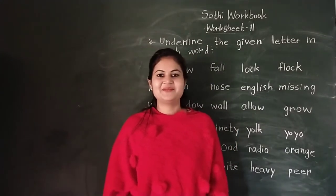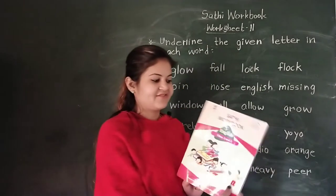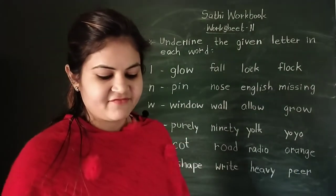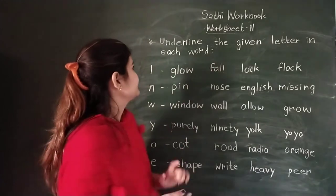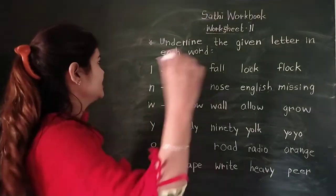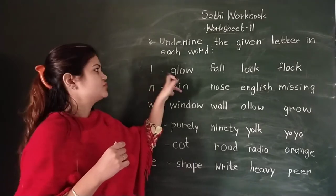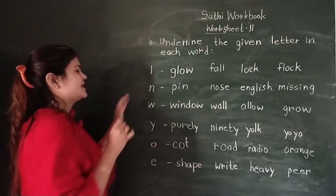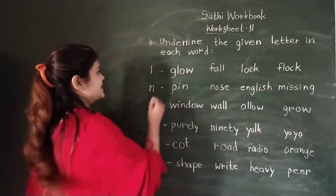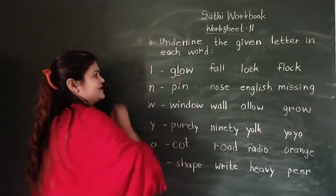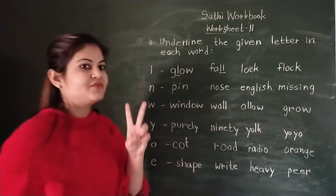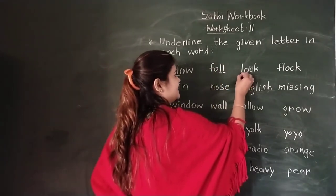Hello everyone, welcome back to my channel English Club. This is Neelam Dhanwani. Dear students, we are doing Workbook 11. You can see what is in Workbook 11 - the task is to underline the given letter in each word. First, which letter is this? It is letter L. So we have to see where letter L appears in each word. In 'glow', there is L. In 'fall', L appears twice. In 'lock', L is at the start. In 'flock', there is also L.